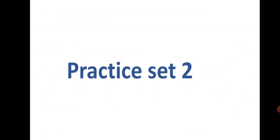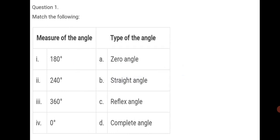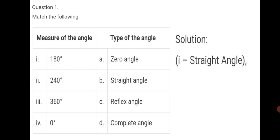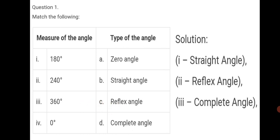Now let us begin with Practice Set 2. Question number 1: match the following. The measure of the angle is given and the type of angle is in the second column. 180 degree is a straight angle. 240 degree means more than 180 and less than 360, so it is a reflex angle. 360 degree is a complete angle. And 0 degree is a zero angle. This way, we have completed question 1.